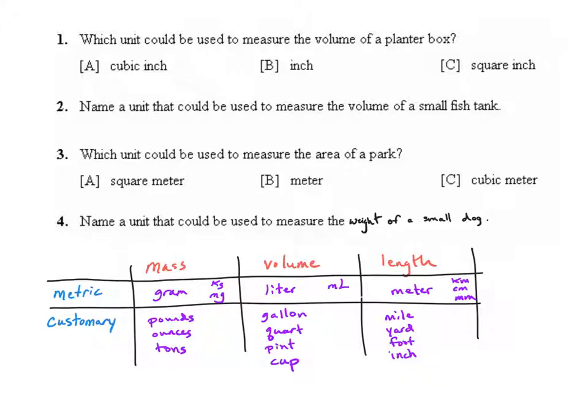Volume refers to the amount of three-dimensional space that an object occupies and it's very similar to capacity. The only difference is that when we're talking about capacity we're talking about containers. So instead of talking about how much three-dimensional space an object occupies it's how much of a liquid or solid a container can hold.